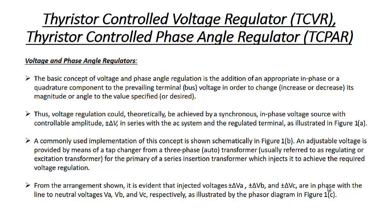Using conventional techniques we can control the voltage directly and the phase angle. Sometimes we can control voltage only, sometimes phase angle only, and sometimes both. The basic concept of voltage and phase angle regulation is the addition of an appropriate in-phase or quadrature component of the prevailing terminal bus voltage in order to decrease or increase its magnitude or angle. We are inserting a voltage in series with the transmission line that can be added in phase with the sending end voltage so that the sending end voltage is modified to a new increased or decreased voltage.